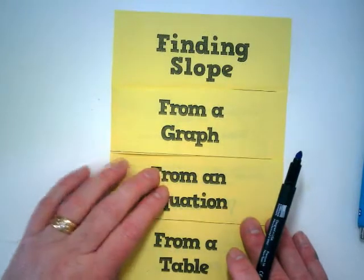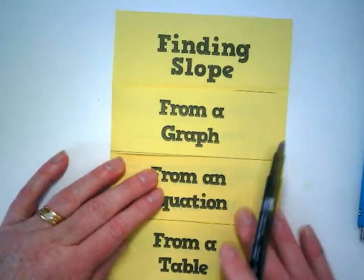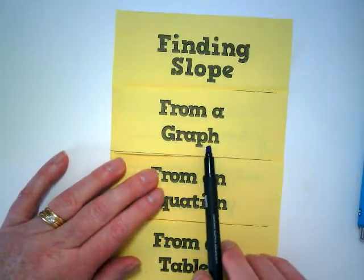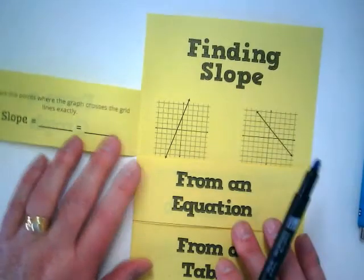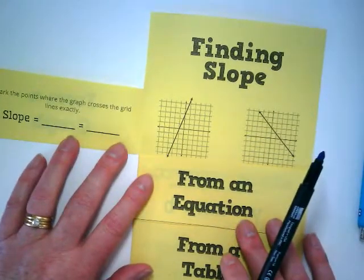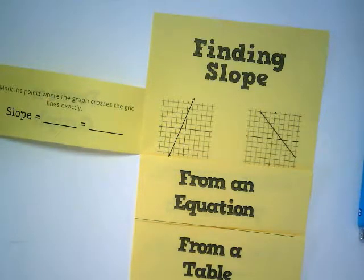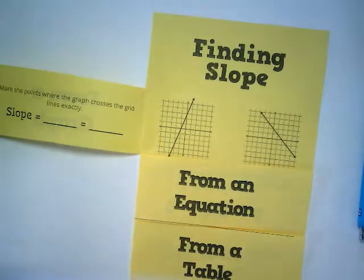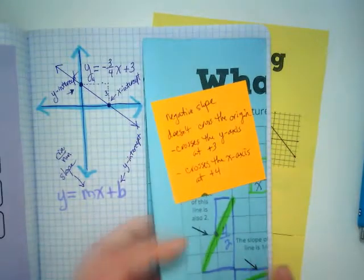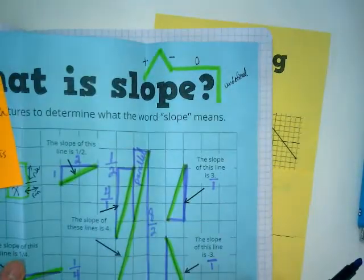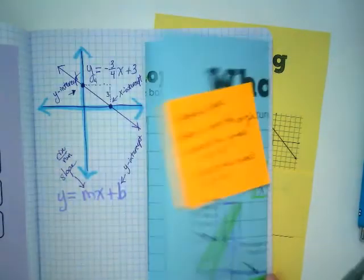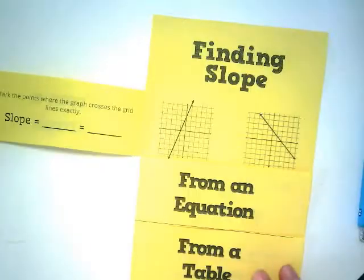We are going to open up the flap that says finding slope from what? A graph. A graph. This should be somewhat of a review. We've been talking about this for a couple of days. When I look inside of our notebooks, you guys already have this that folds out that is finding slope from a graph. We're just going to formalize the notes here a little bit.